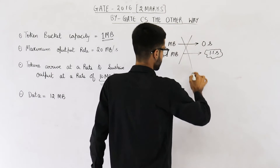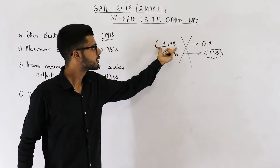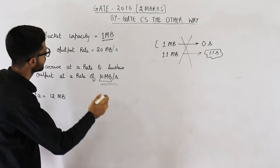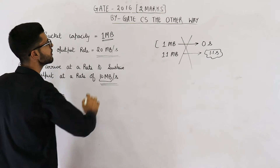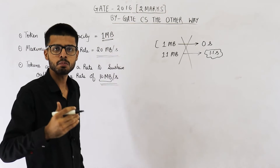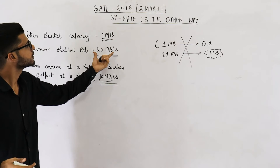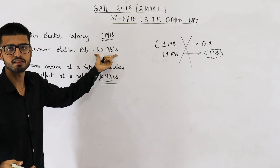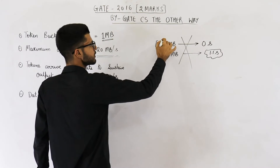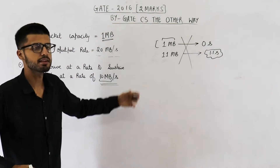This is incorrect. Even if you have tokens, you will still need some time to send data. That time will be dependent on the maximum output rate, which is given as 20 MB per second. That means the machine or channel being used cannot send data at a speed more than this. So this is a bottleneck. Even if you have tokens, this first 1 MB will be sent at 20 MBPS because that is the maximum output rate. Let's make this correction.